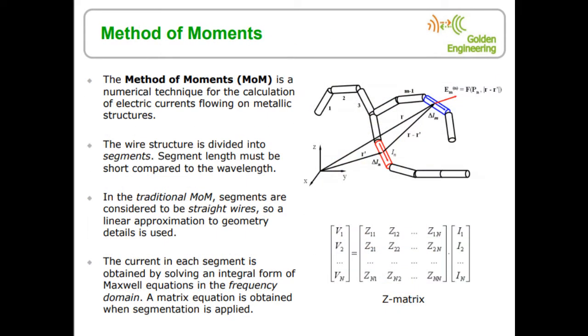Now we will talk about the Method of Moments. It is a numerical technique that comes from statistics and in electromagnetics it is used to calculate the electric currents on metallic structures. To apply the MoM we have to divide the antenna into small segments compared to the wavelength. Each segment represents a dipole moment having an unknown current intensity.